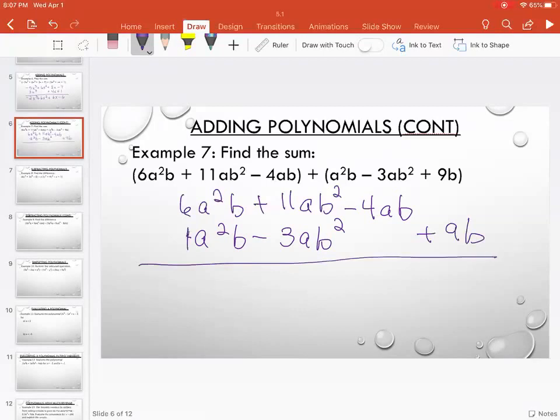6 plus an understood 1 is 7, and I keep my variable component the same. 11 minus 3 is 8. There's nothing to add to the negative 4AB, and nothing to add to the 9B, so those just drop down.